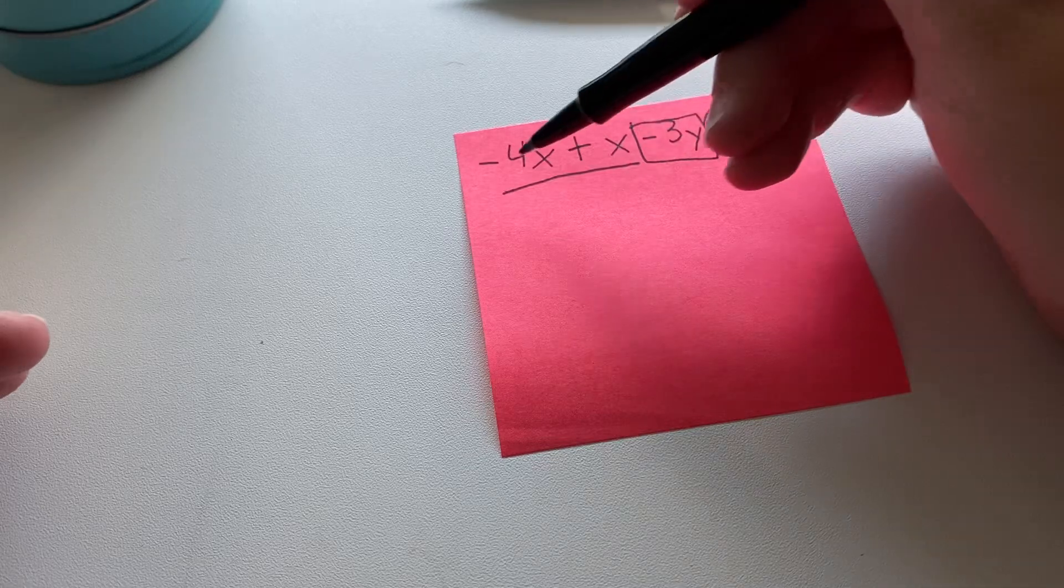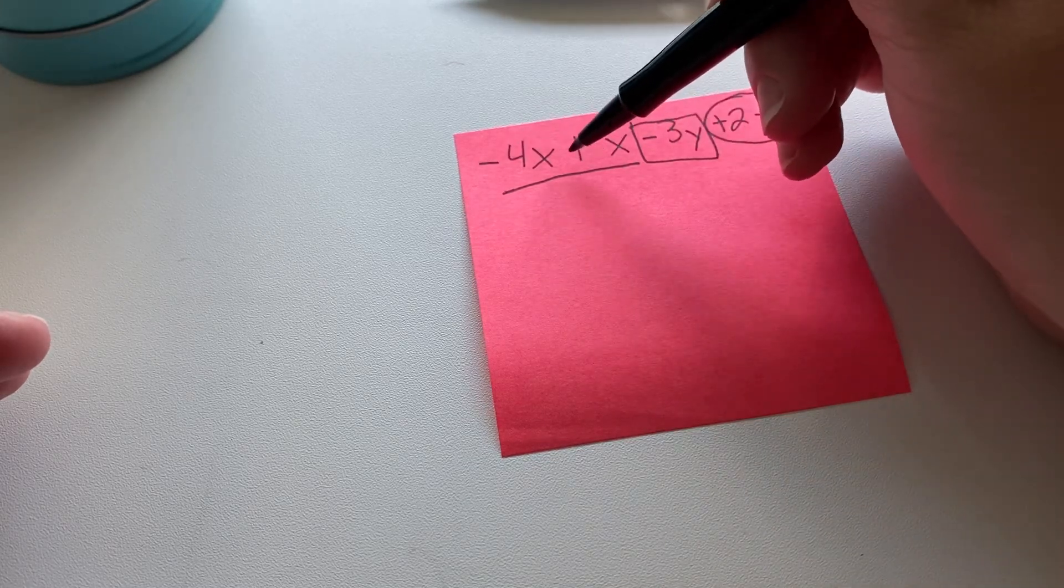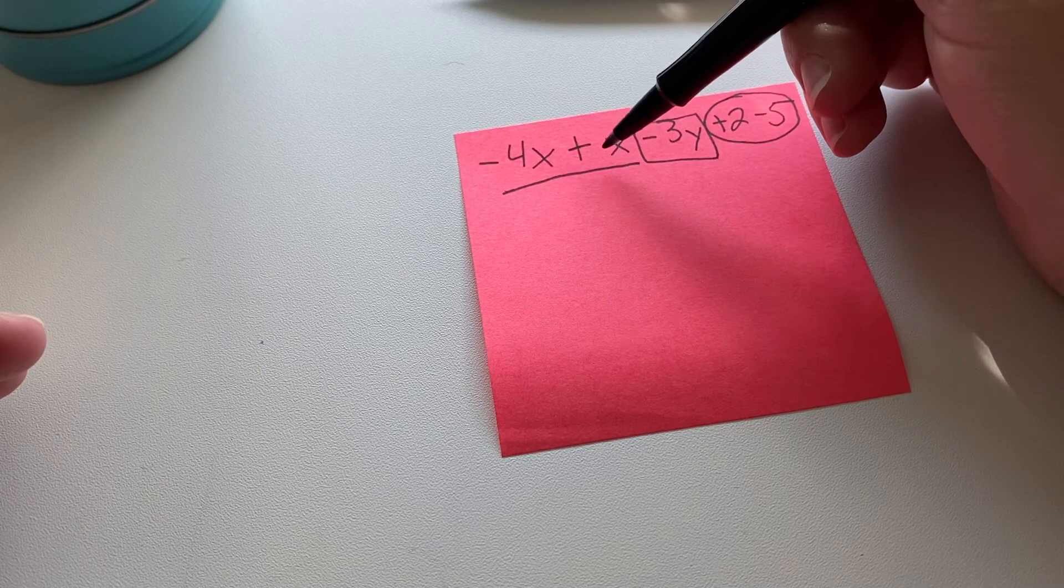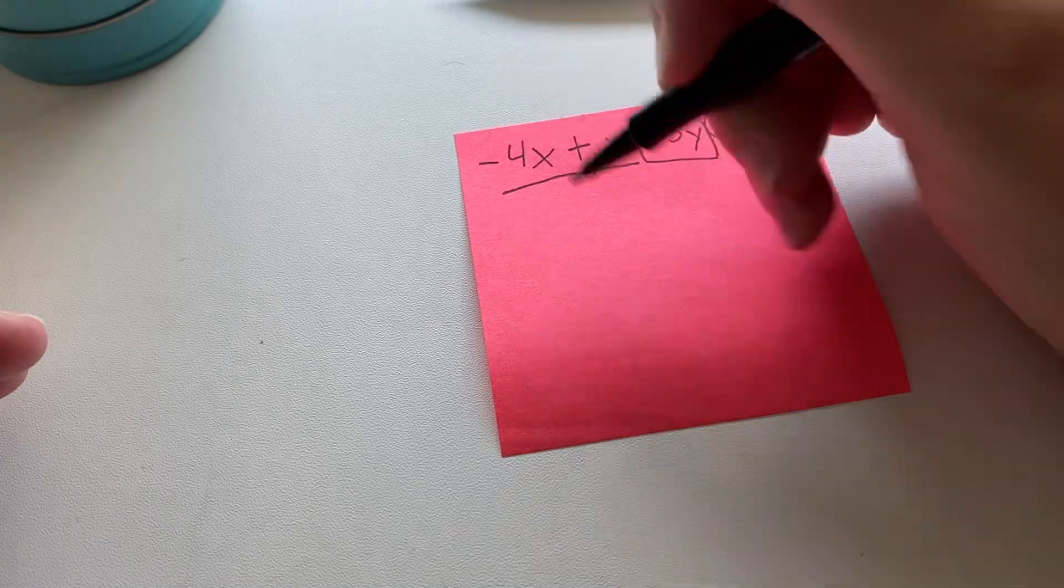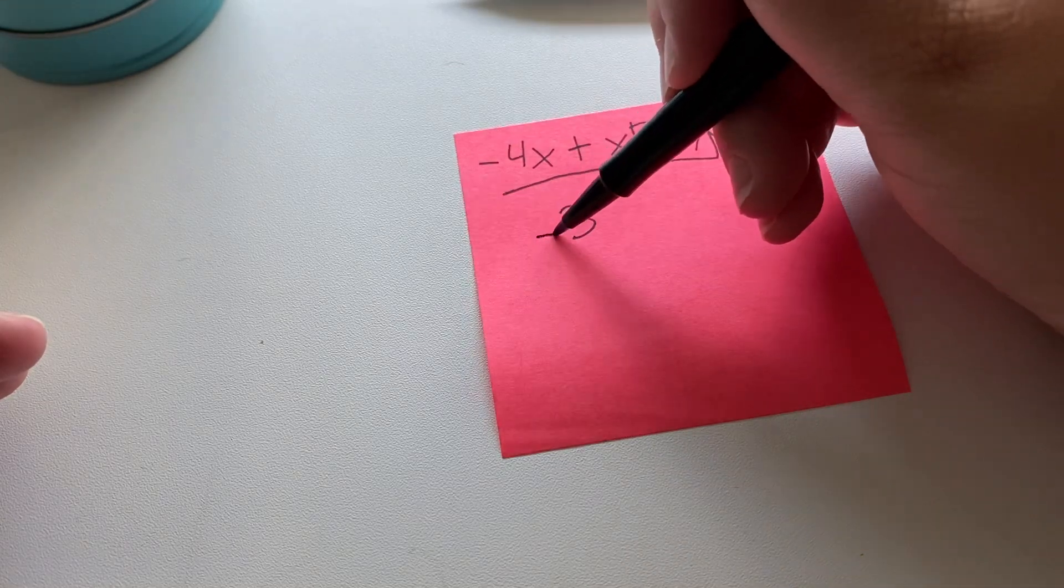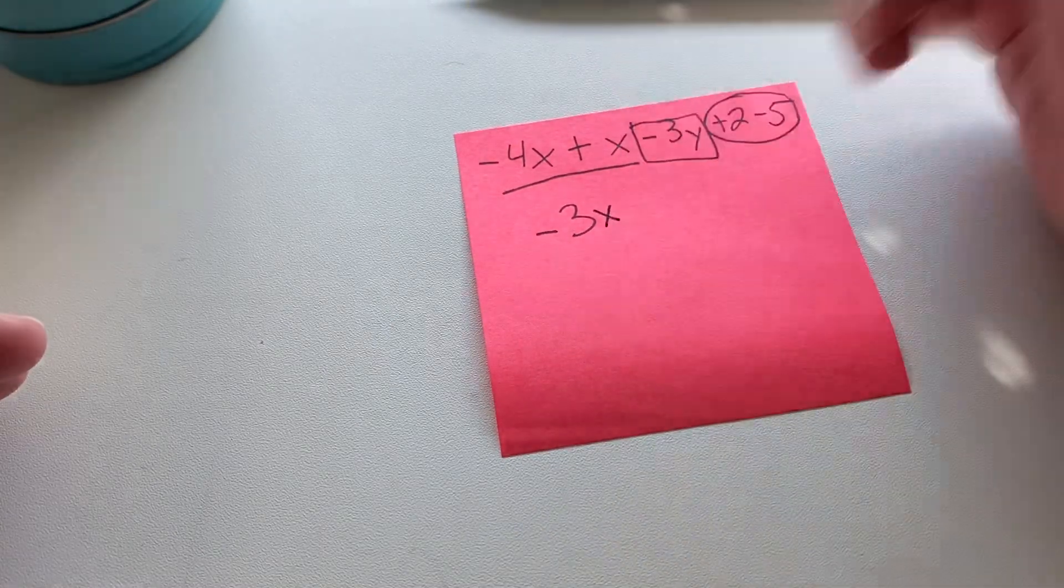Different signs, subtract. So we're going to subtract the four and the one, this invisible one that's right here with the x. So the difference between four and one is three. Keep the sign of the bigger digit. So that's the negative. And those are our x's.